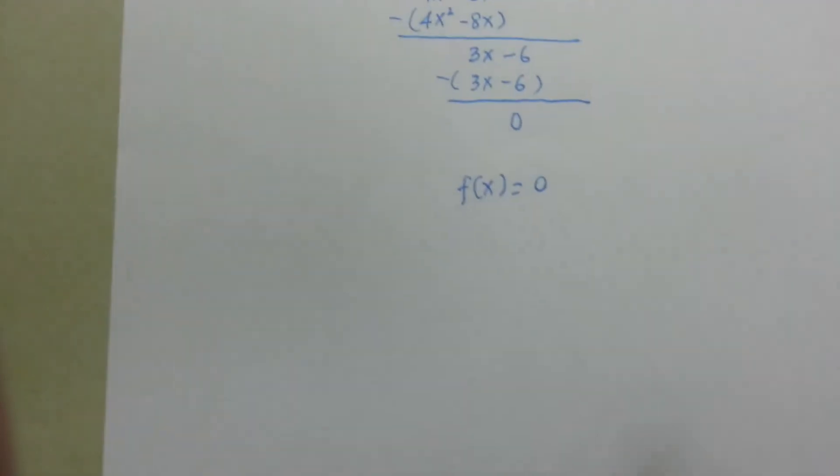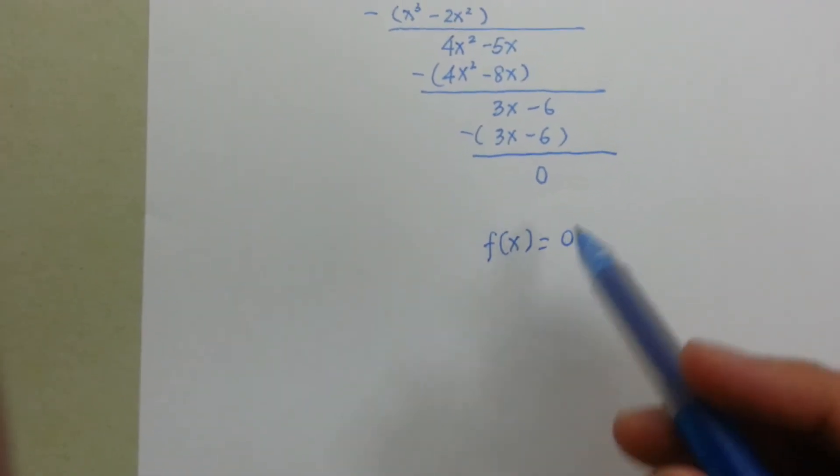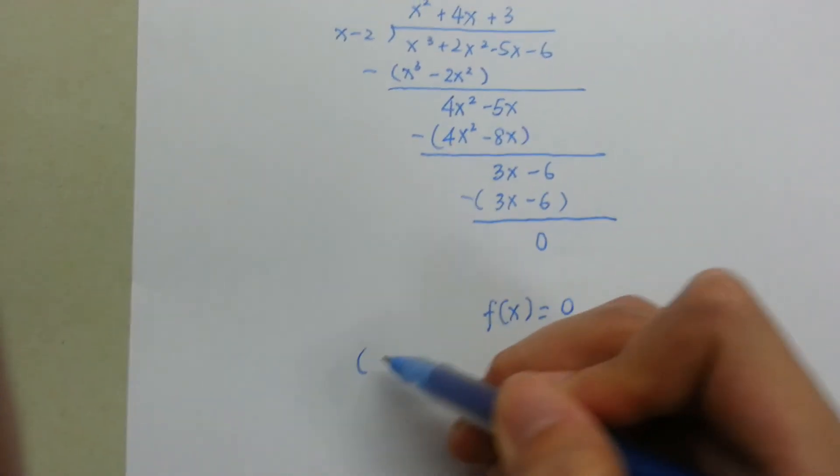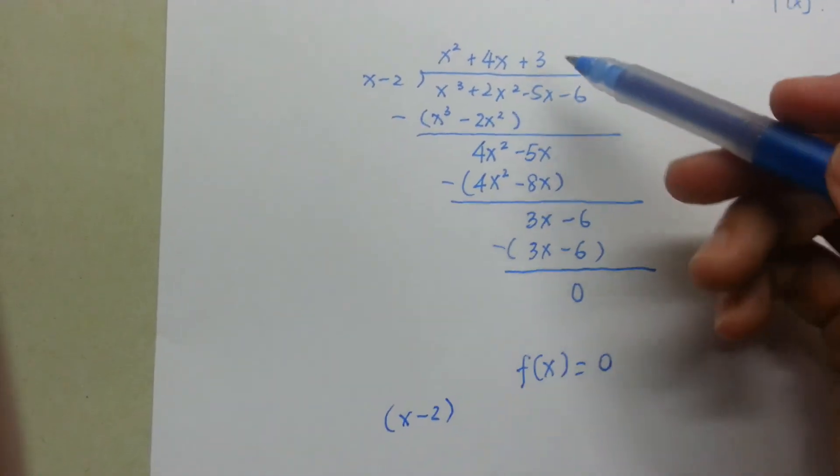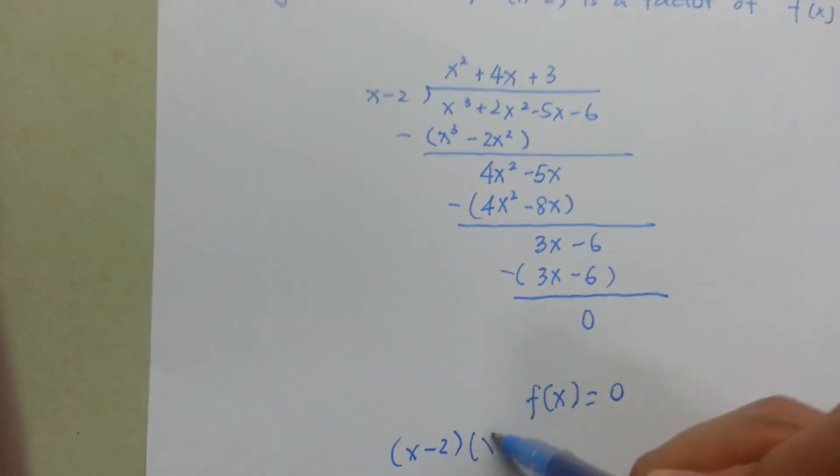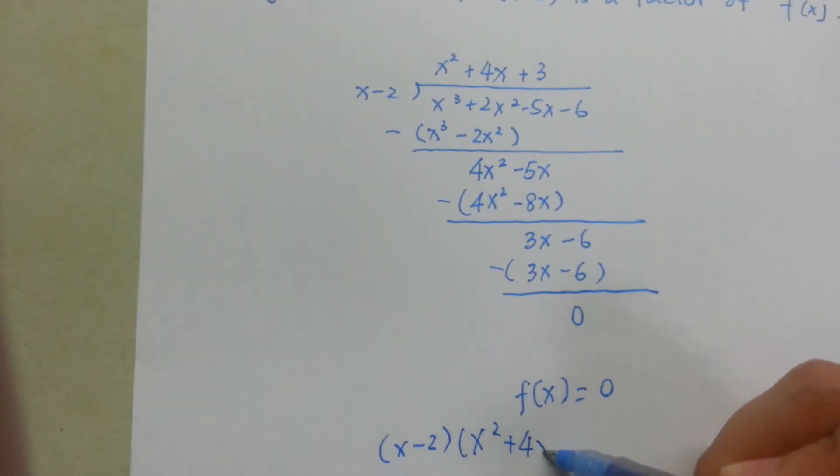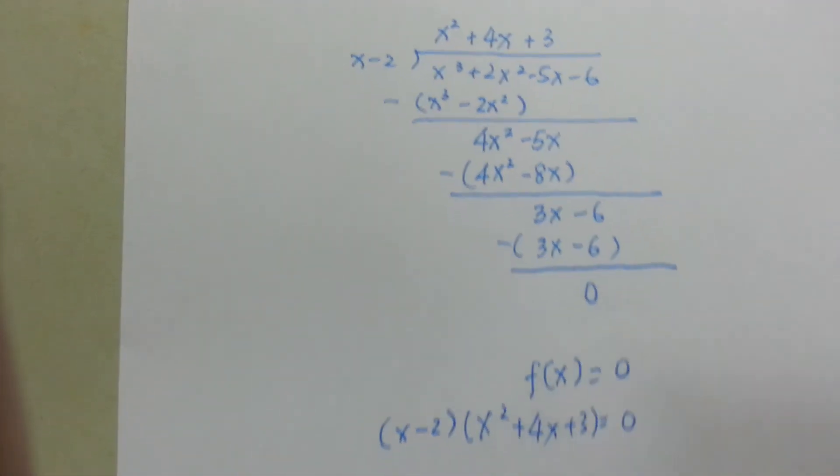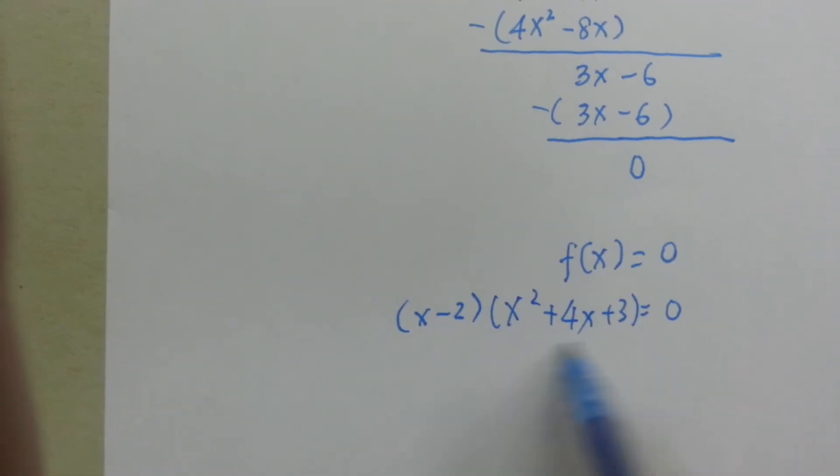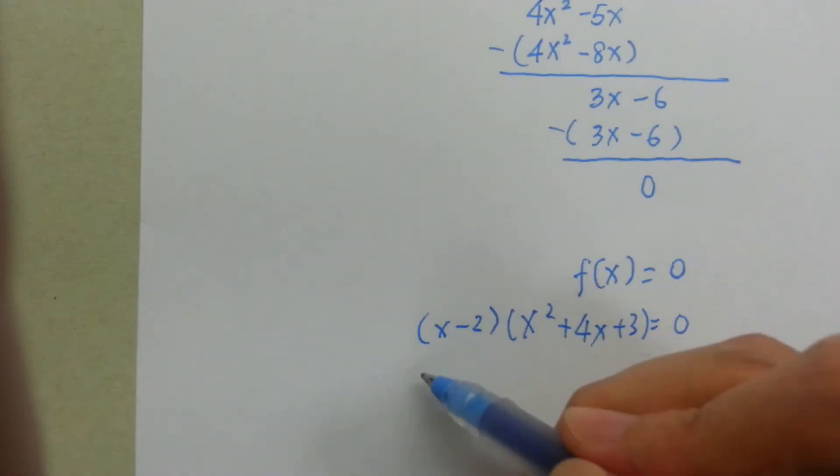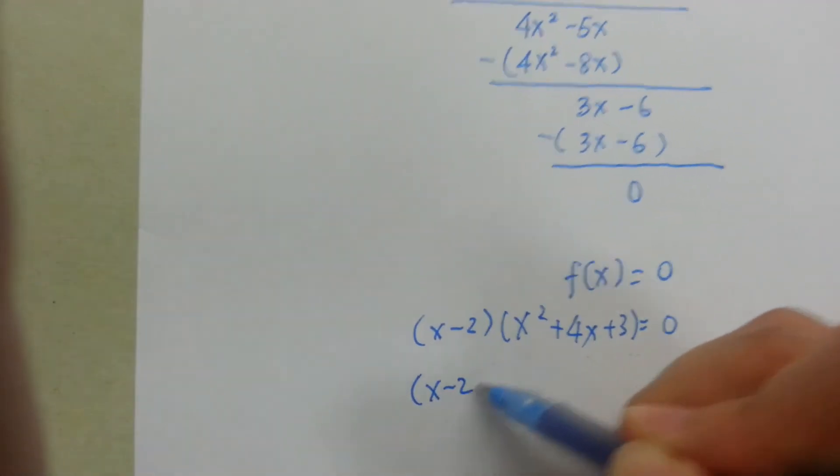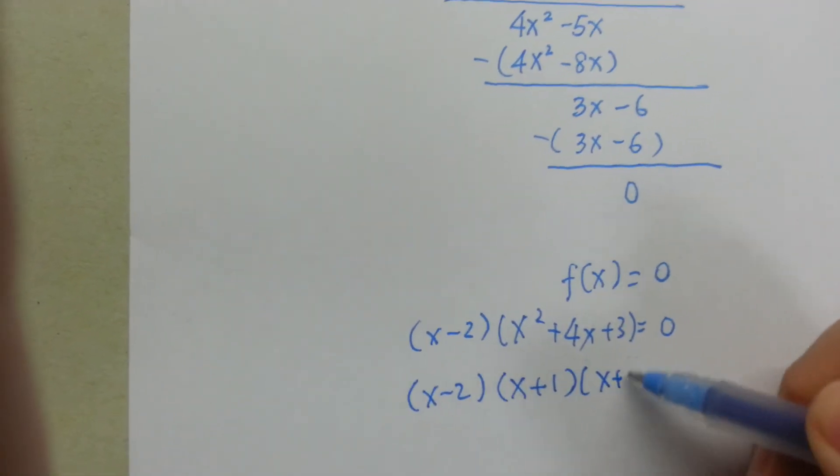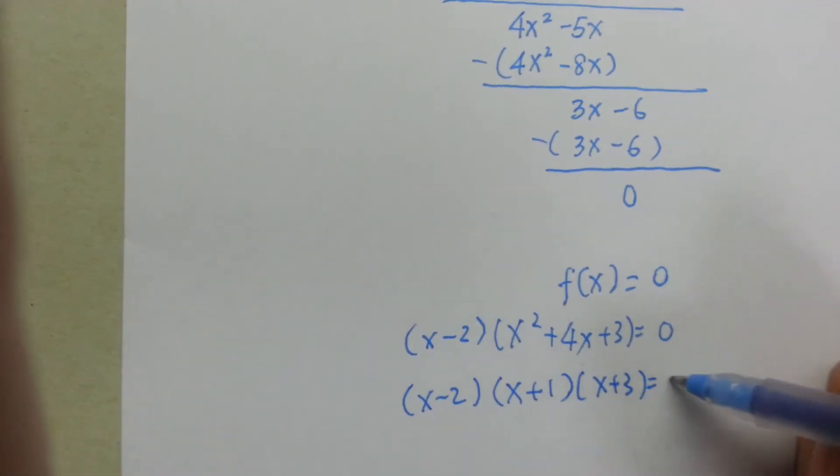What's f(x)? After we have seen the long division, you can take x-2 and the quotient x² + 4x + 3 = 0. I can continue to factorize this into (x-2)(x+1)(x+3) = 0.